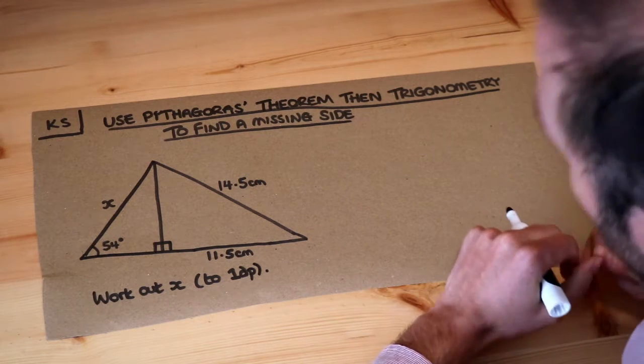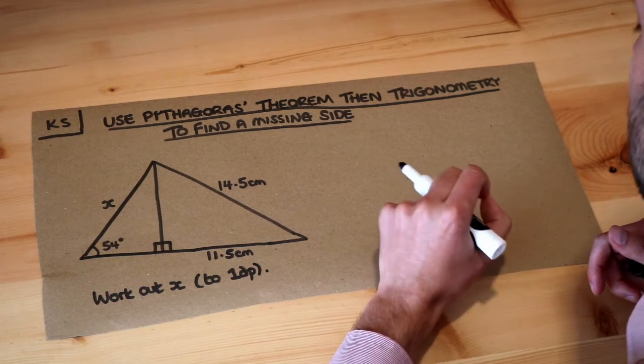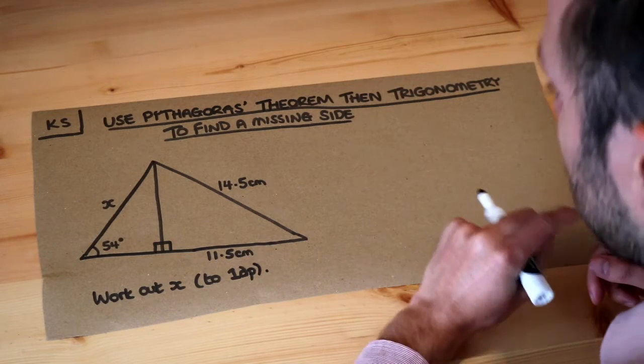Now this is using skills that we've already learned in previous videos. I'm assuming you know how to use Pythagoras' theorem and I'm assuming you know how to use trigonometry on right angle triangles like SOHCAHTOA.